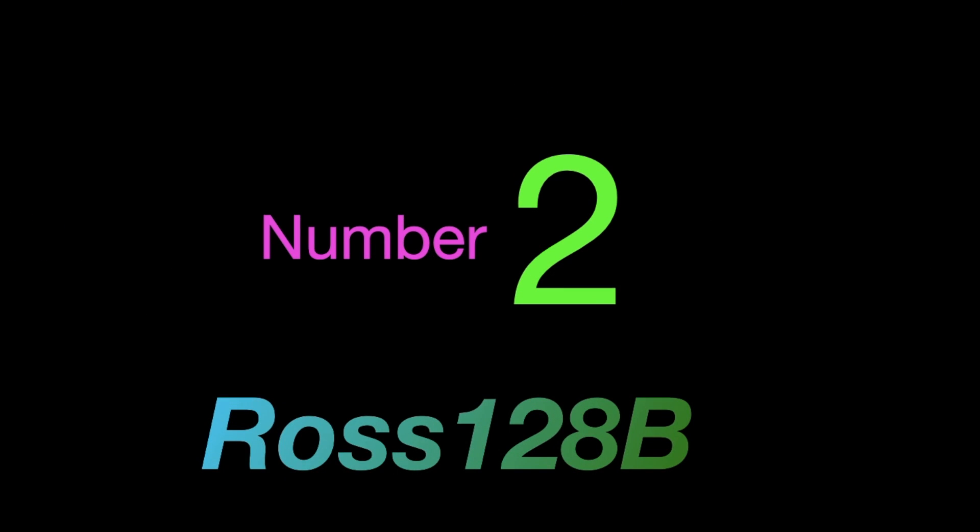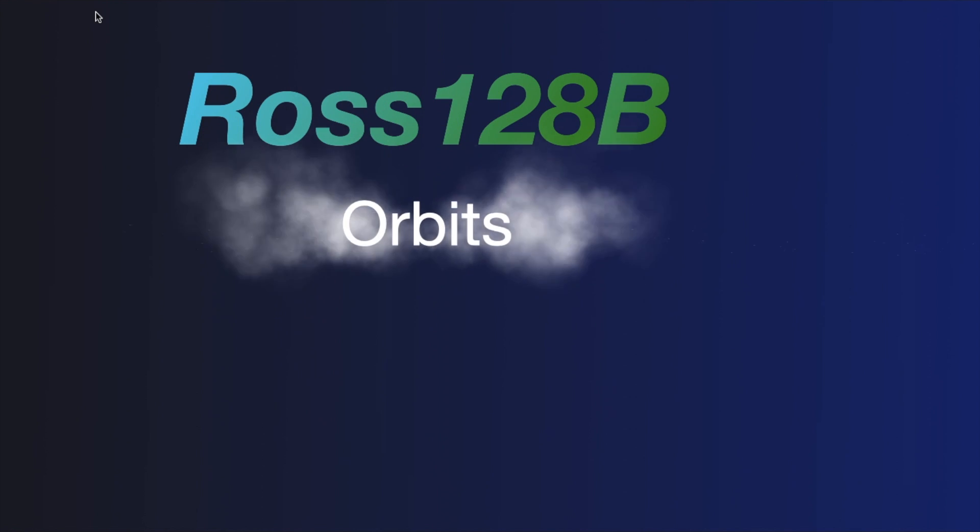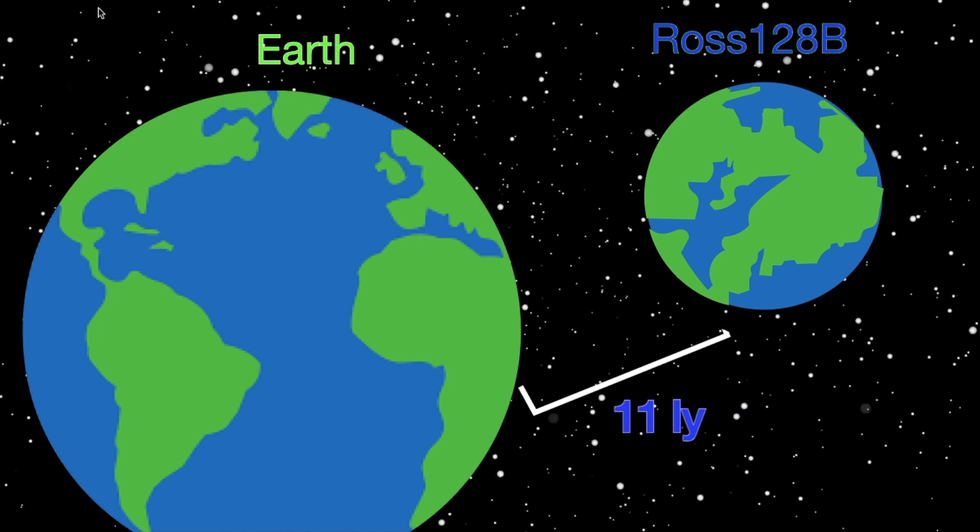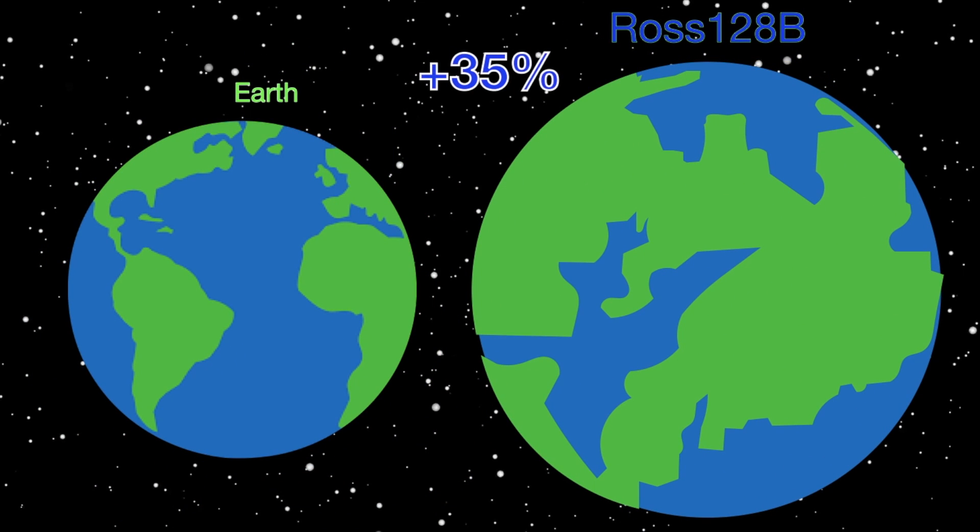Number 2: We have Ross 128 b, which, just like its name states, orbits Ross 128. It is about 11 light years from Earth, and 35% more massive than Earth.